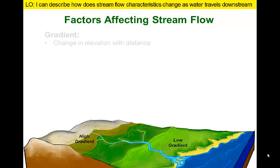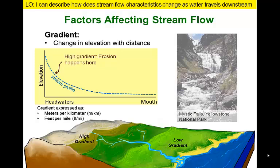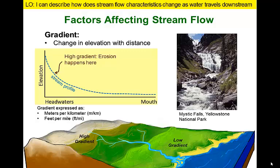Streams flow downslope from high elevations to low elevations. Near their headwaters, slopes are steeper with higher gradients that may result in streams dropping several tens of meters per kilometer — think about waterfalls and rapids. This high-gradient part of the stream is characterized by erosional processes.